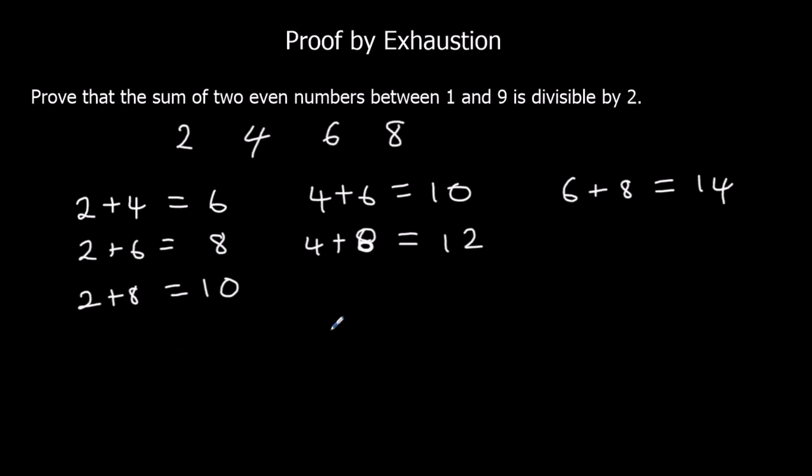All of these options are even, so they're all divisible by 2. All options are divisible by 2. So we have proved it by exhaustion.